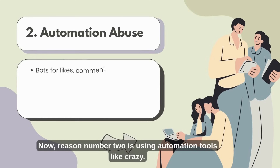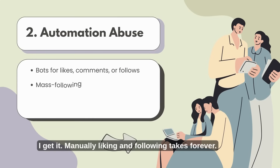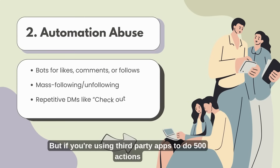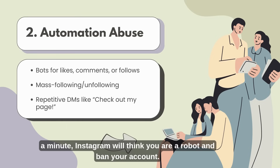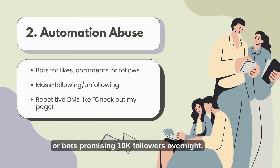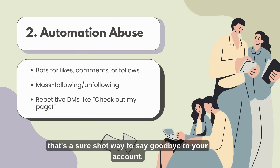Reason number two is using automation tools like crazy. I get it — manually liking and following takes forever. But if you're using third-party apps to do 500 actions a minute, Instagram will think you are a robot and ban your account. Auto DMs, mass follows, or bots promising 10k followers overnight — that's a sure short way to say goodbye to your account.